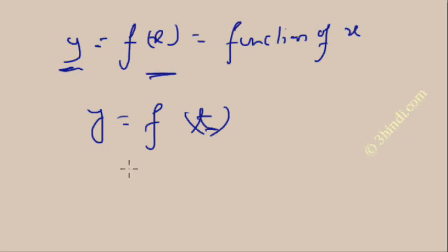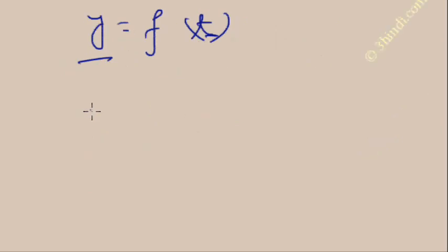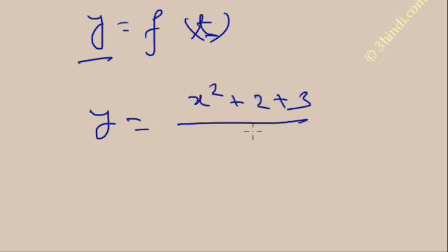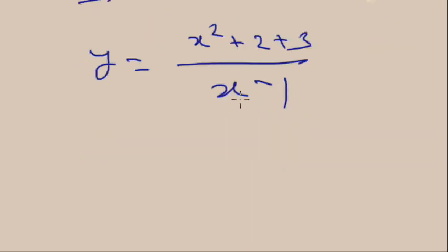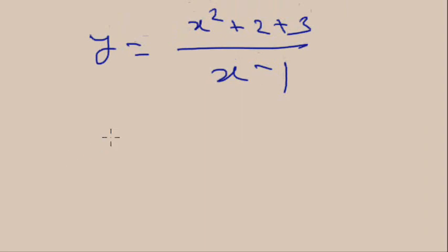Y can also be written as f(t), where t is the variable — all such functions are functions of a single variable. Y is a function of X and can be any type, for example: (x² + 2x + 3) / (x − 1).